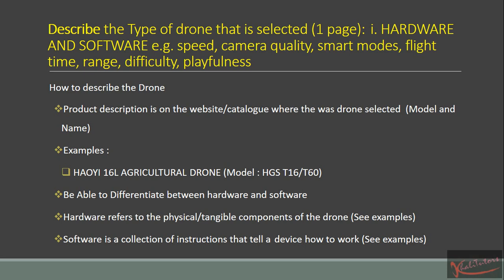But how do you describe the drone? Where do you get the information? Most of the information that you need for this question is found in your product description. The product description is normally found on the website where you found or selected your drone, or in a catalog. So if you use takealot.com, the product description will be at the bottom.